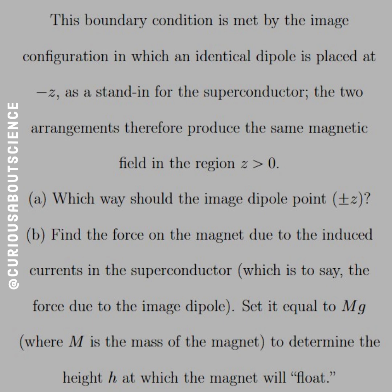So part A, which way should the image dipole point in the plus or minus z? So should the arrow be up or down is what they're asking. And then B, find the force on the magnet due to the induced currents in the superconductor, which is to say the force due to the image dipole set equal to Mg, where M is the mass of the magnet, to determine the height H at which the magnet will float. This is so cool.